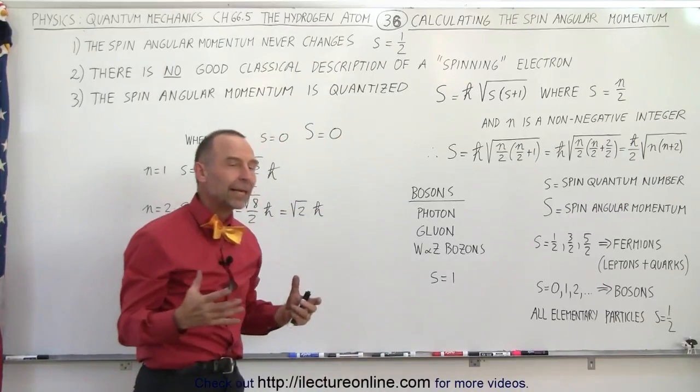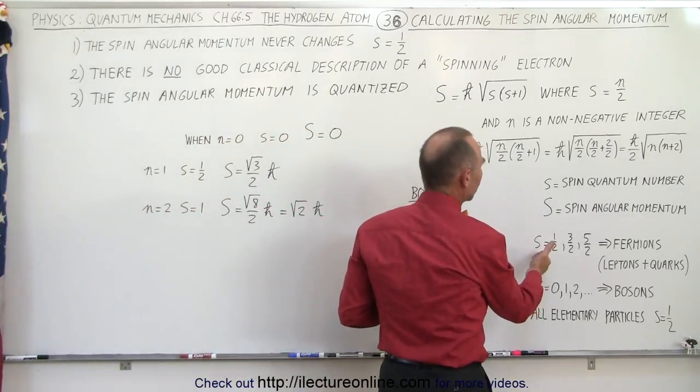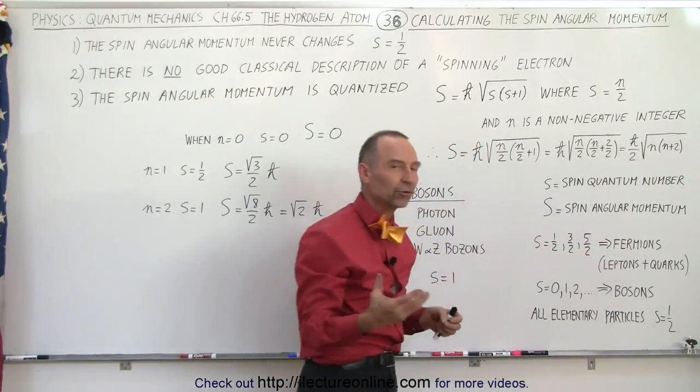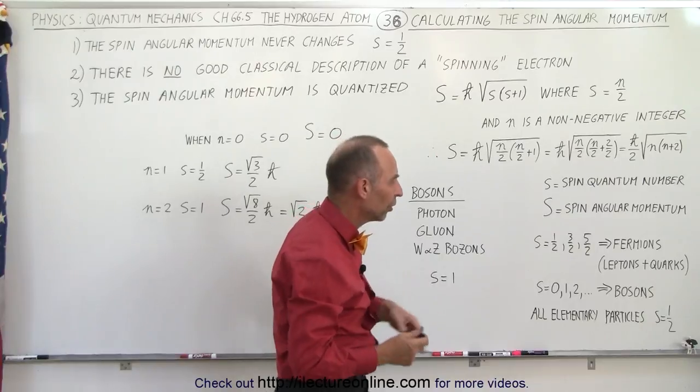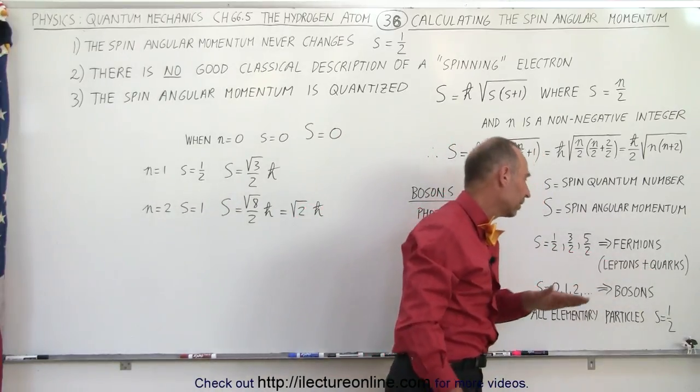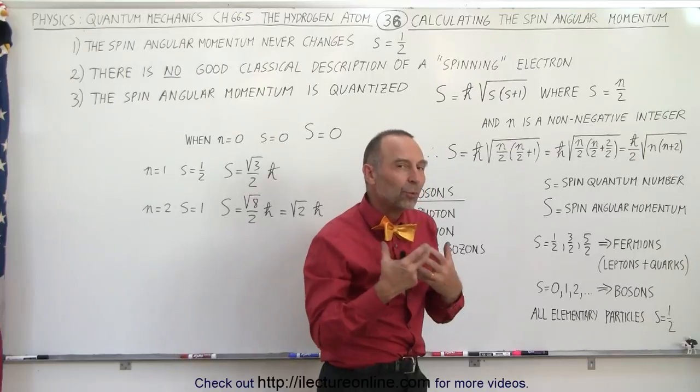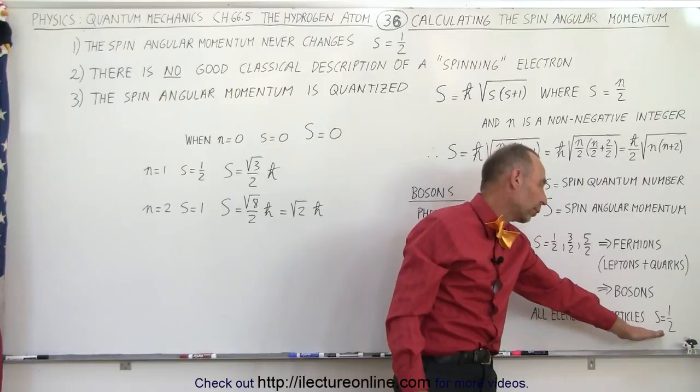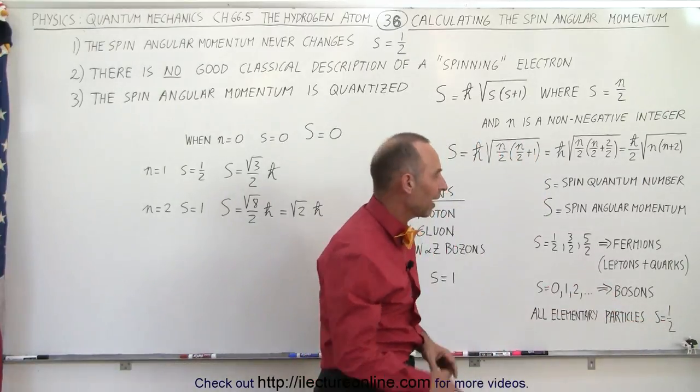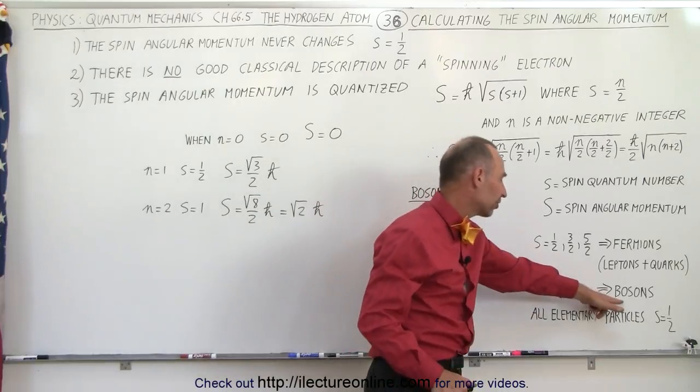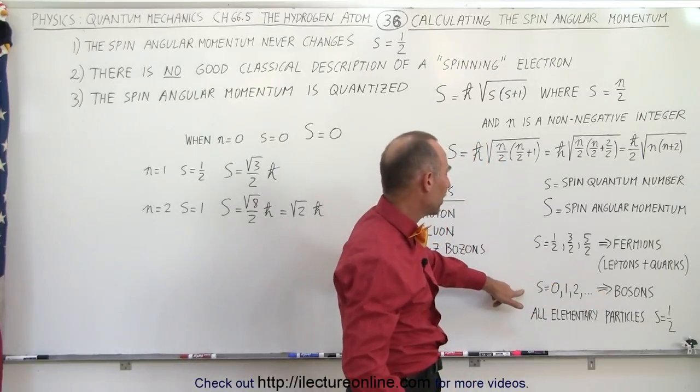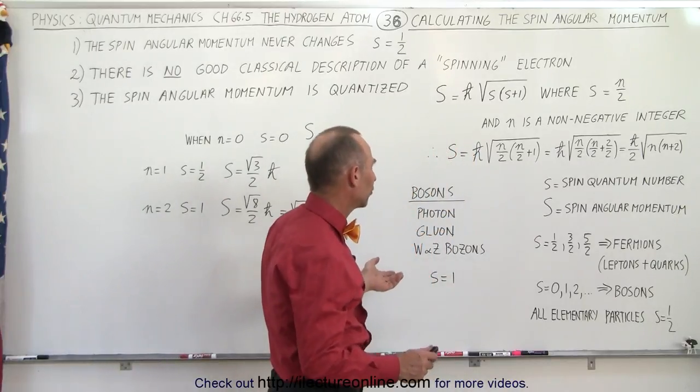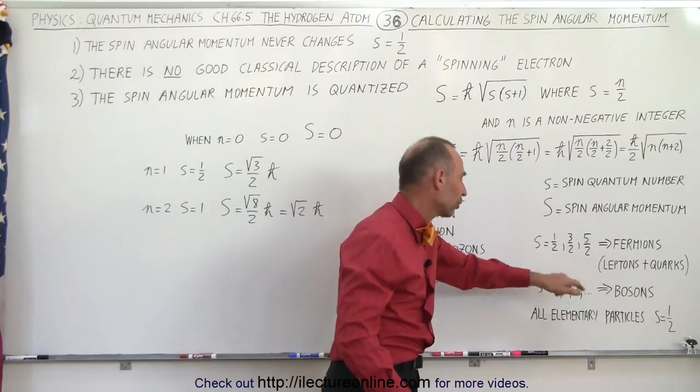So theoretically, the spin quantum number could be 1 half, 3 halves, 5 halves, and so forth for particles called fermions. Those are basic particles consisting of either leptons or quarks. And that's just theoretical because in practice we find that all elementary particles actually have the spin quantum number as 1 half, not 3 halves or 5 halves. And then bosons are particles that have spin quantum number of 0, 1, or 2.